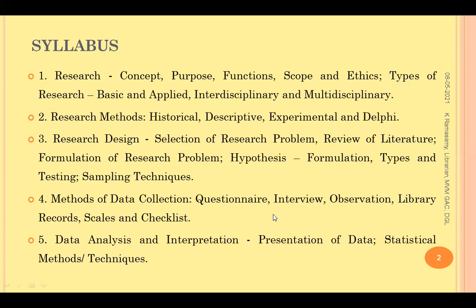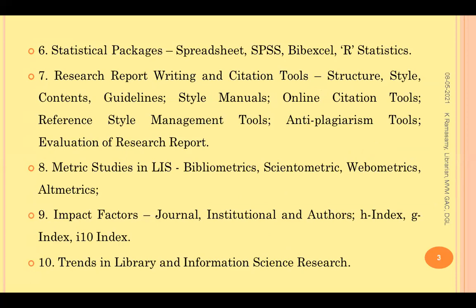Research design covers how to select the research problem, how to review literature, how to formulate the research problem, how to formulate and test the hypothesis, various sampling techniques, how to collect data using questionnaires, interviews, observation, and library records, how to analyze and interpret the data, and what statistical packages are available for analyzing data. We also cover how the report is to be written and what style to follow in structuring your research output, as well as the availability of citation tools, anti-plagiarism tools, and a special branch called metric studies — bibliometrics, scientometrics.